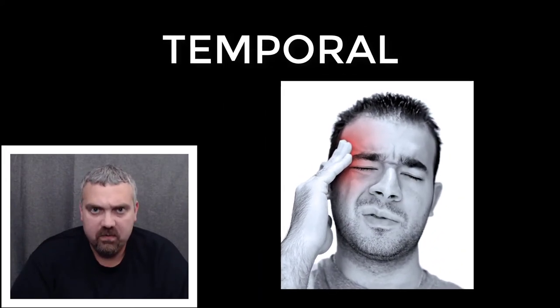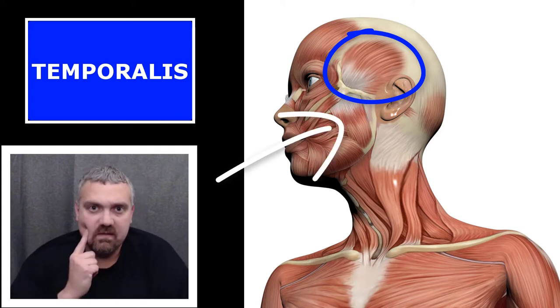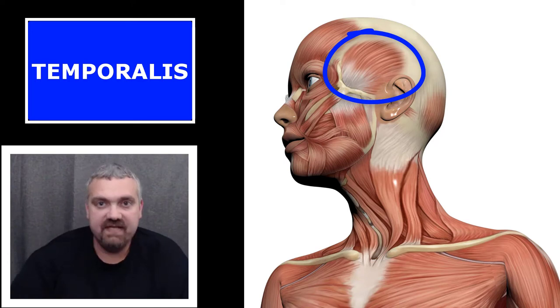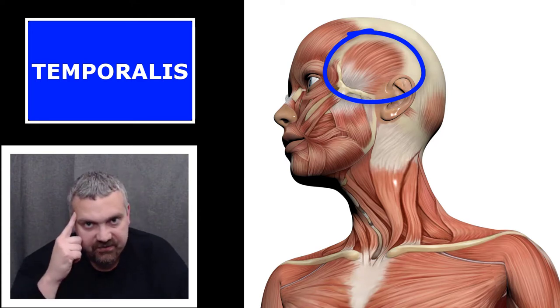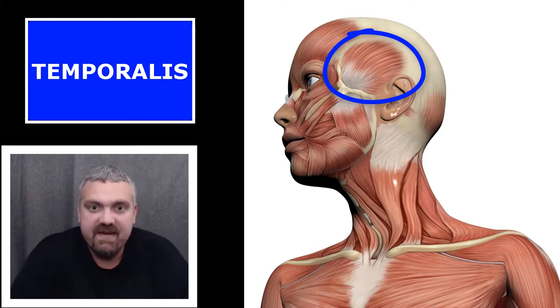Another key term in this region is temporal, which means around the temporal bone and the temple. The key muscle here would be the temporalis muscle. The temporalis muscle, along with the masseter — between your maxilla and mandible — are your two primary muscles of mastication. Clench your teeth together and you'll feel the temporalis muscle contract here and the masseter contract here.